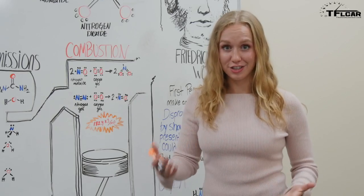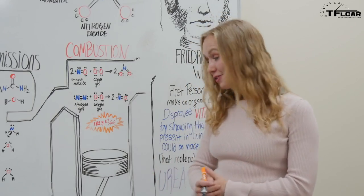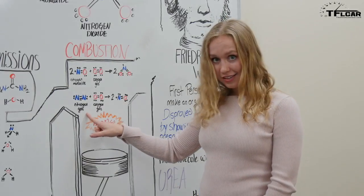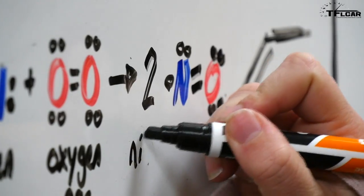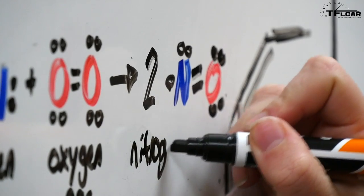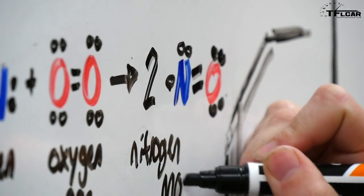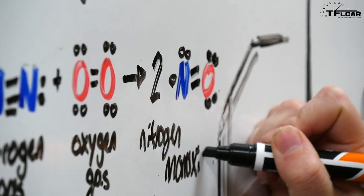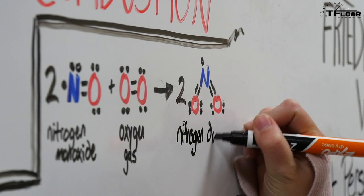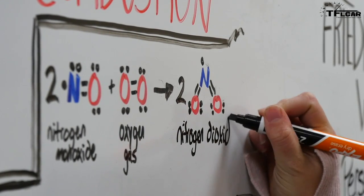During combustion in diesel engines, NOx emissions are produced by nitrogen gas combining with oxygen gas and forming nitrogen monoxide. And then those nitrogen monoxide molecules further reacting with more oxygen gas to produce nitrogen dioxide.